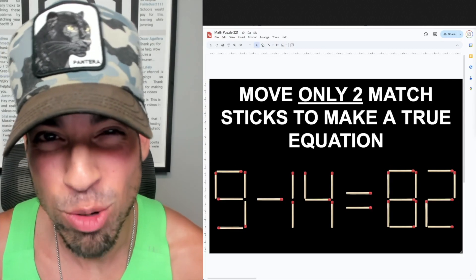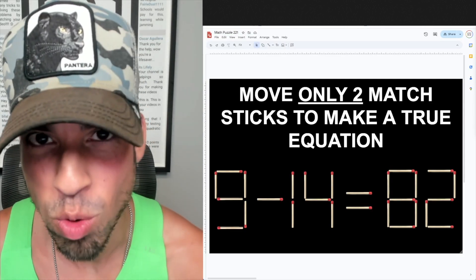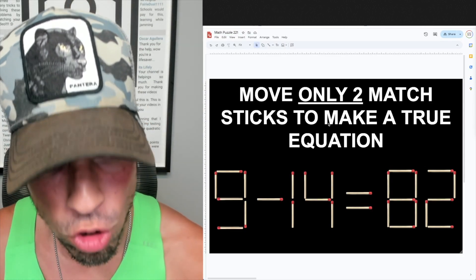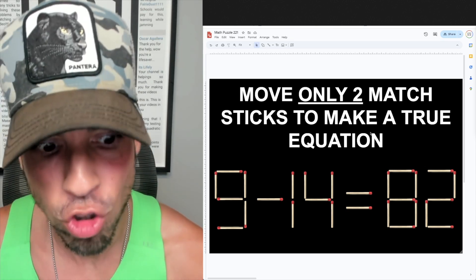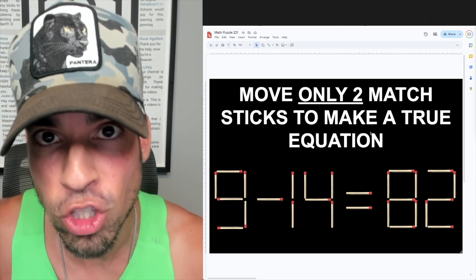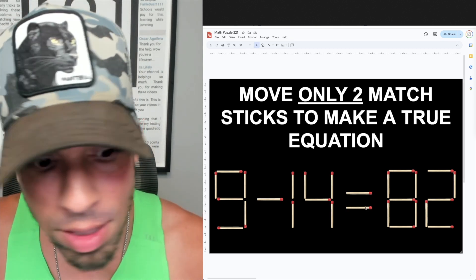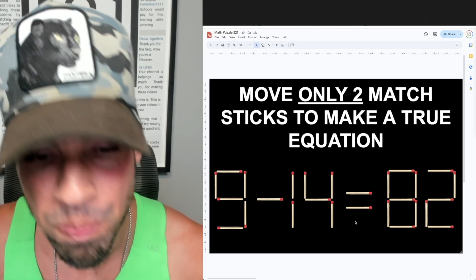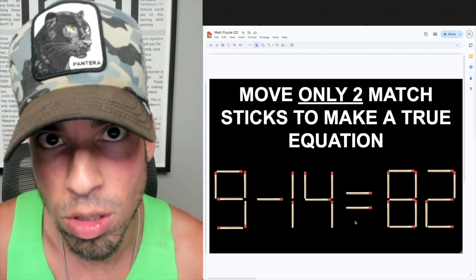What's up everybody and welcome back to another math puzzle. In this one, the question is as follows: move only two matchsticks to make a true equation. When we say make a true equation, it means that we're not trying to do a does not equal symbol. A line through here is not going to be an acceptable solution.